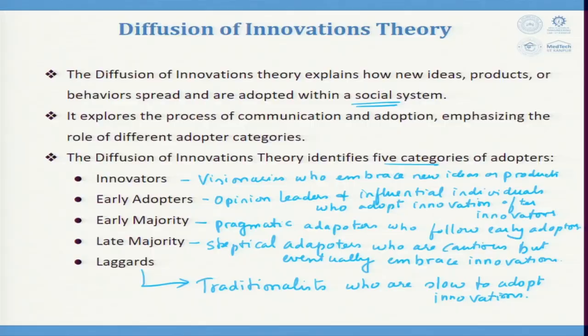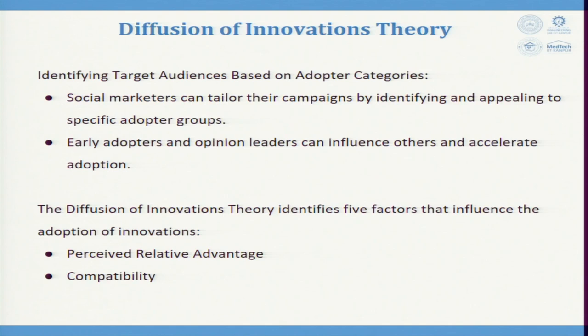Early majority are pragmatic adopters who follow early adopters. Late majority are skeptical adopters who are cautious but eventually embrace innovation — they do it a little late. Laggards are traditionalists who are slow to adopt innovation. These are the five categories of adoption in the diffusion of innovation.